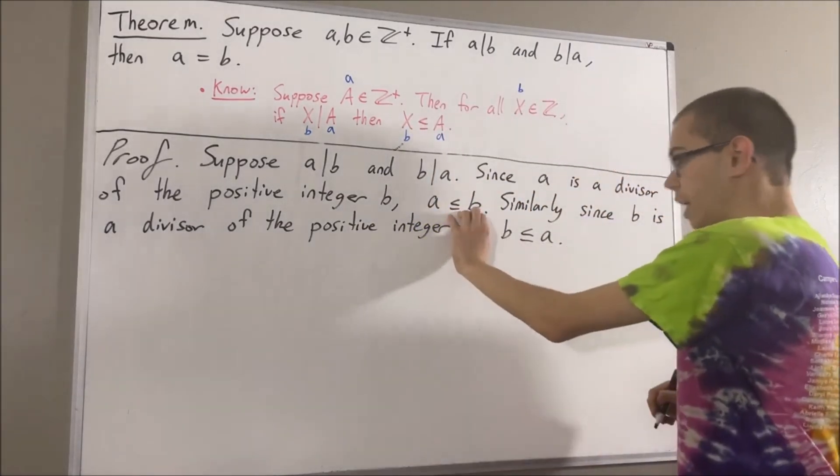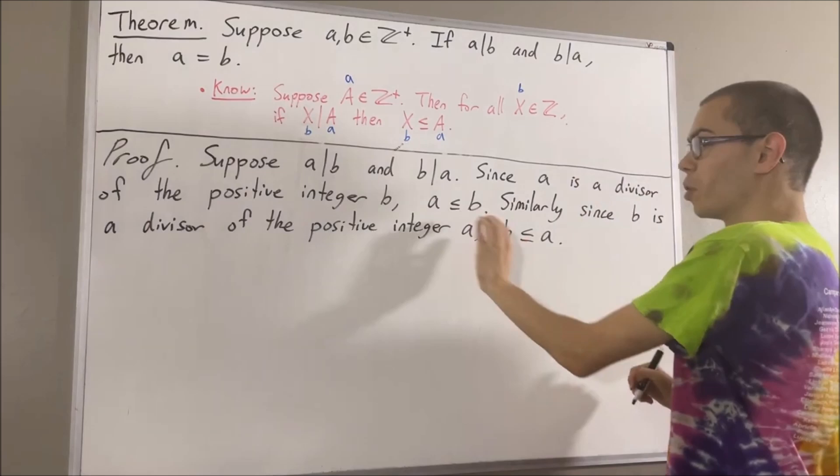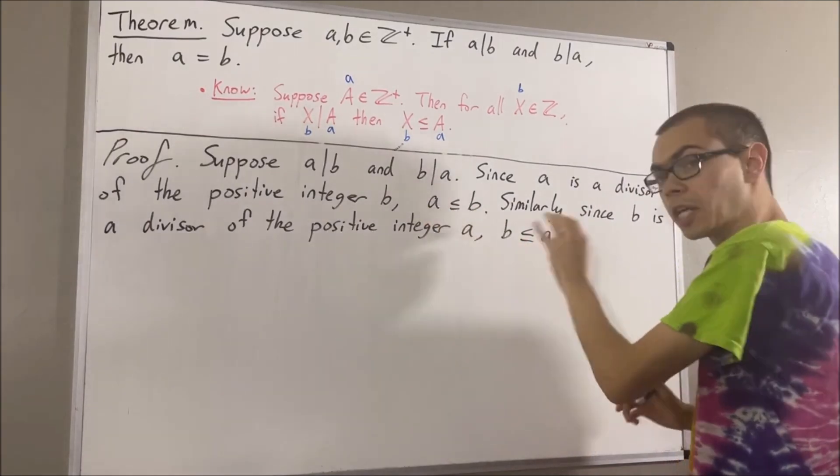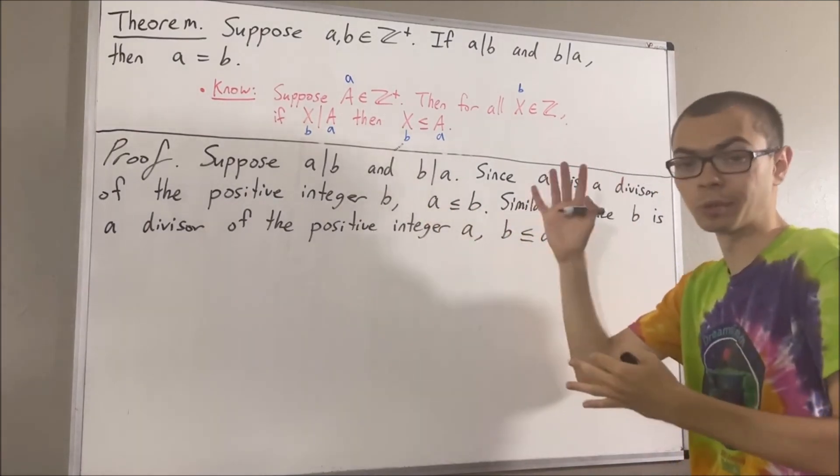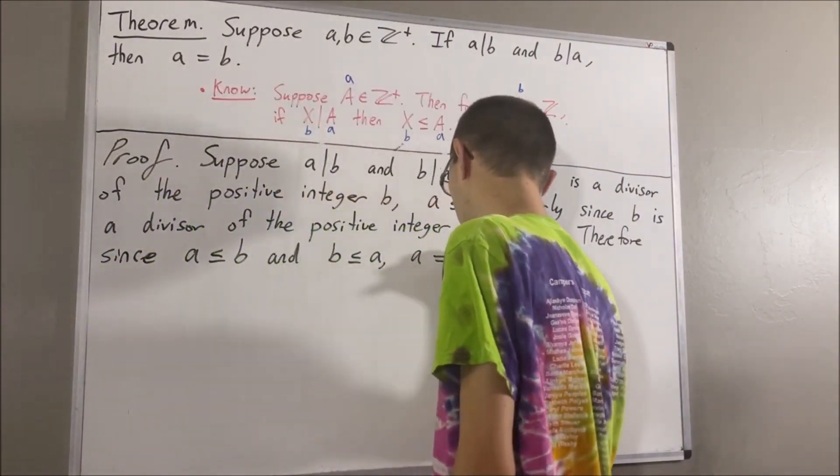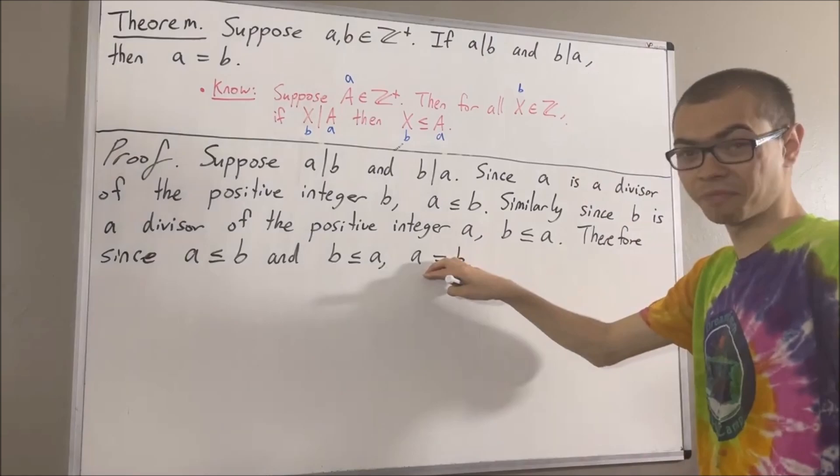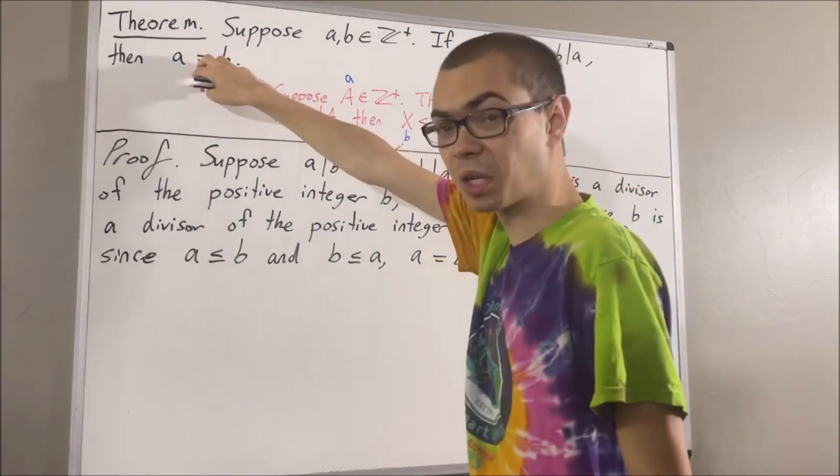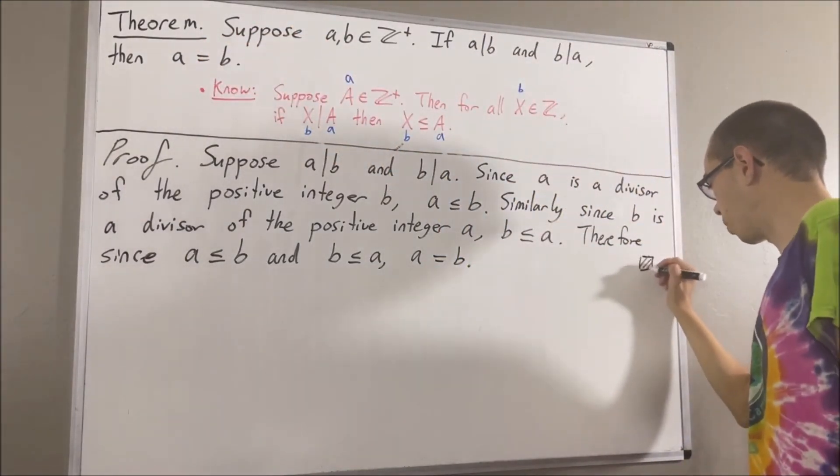So A is less than or equal to B, and B is less than or equal to A. Well these two inequalities together tell us that A is equal to B. So we've shown that A is equal to B, and that is exactly what we wanted to prove, so this completes the proof.